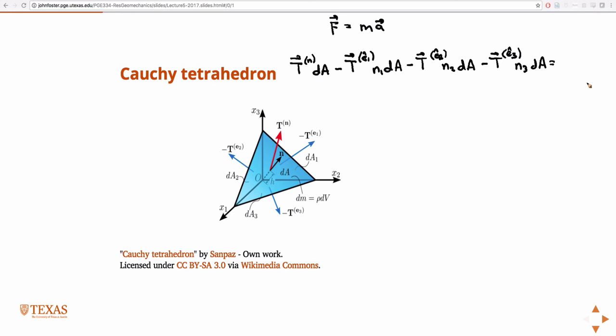Mass is density times volume. I don't know what the density is, so we'll just use rho. Times volume, what's the volume of a tetrahedron? Where the base has equal sides. It's one-third the base times the height. The area of the base is dA. The height is labeled there. So this h is the distance between the centroid of this area and the origin. So one-third dA times h. So that's mass. That's m. And then a is the acceleration vector. So that's f equals ma.